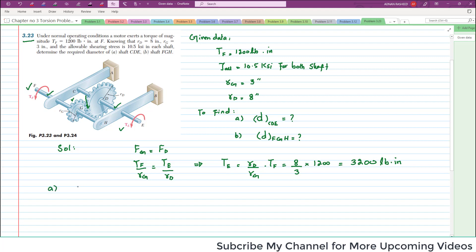Now we will calculate the diameter of shaft CDE. As we know from our previous problem, maximum shearing stress equals 2T over pi C cubed, or we can write C cubed equals 2 times T over pi times shear stress. So now put the value for shaft CDE. 2 into torque in shaft CDE which is equal to TE, so TE is 3200.